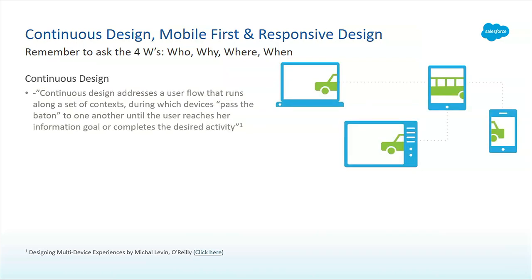When we talk about continuous design, we have to think about how do you move from one point to another. What type of application you're going to be running? What is the context? Is it something that you're going to be using in mobile? Is it something that you're going to be using in browser? This is the key element that we need to account for when we design our user experience.